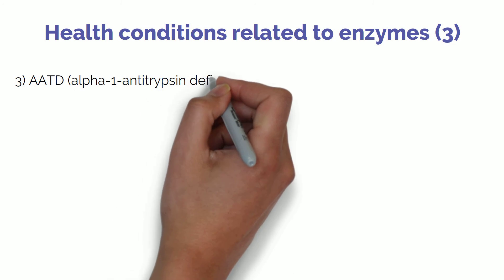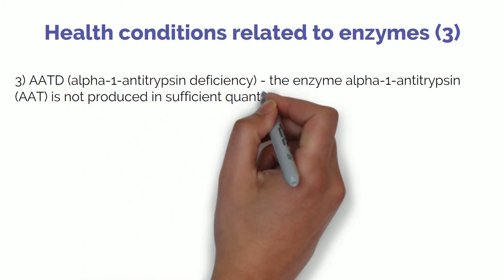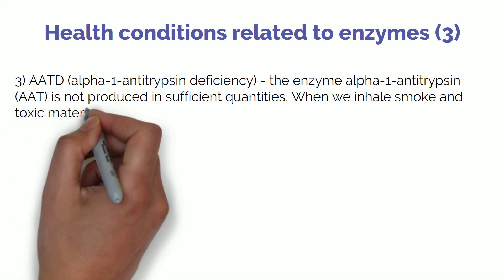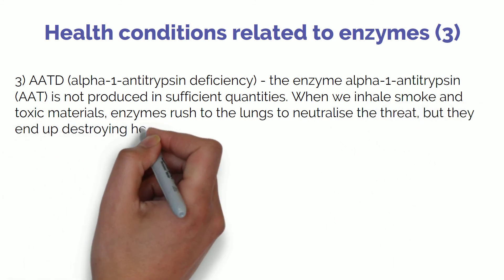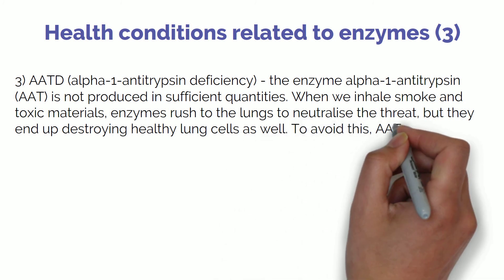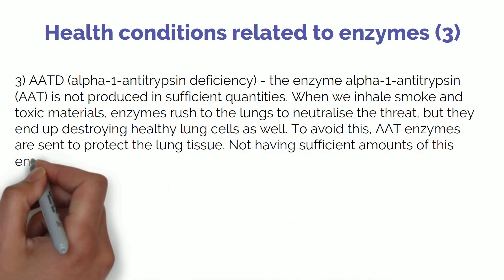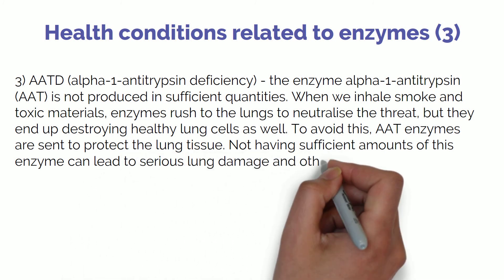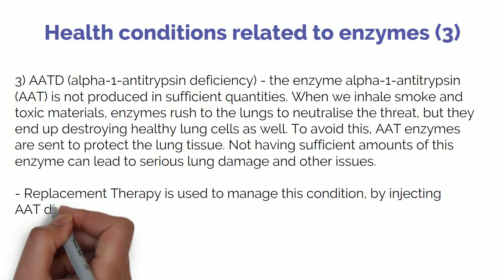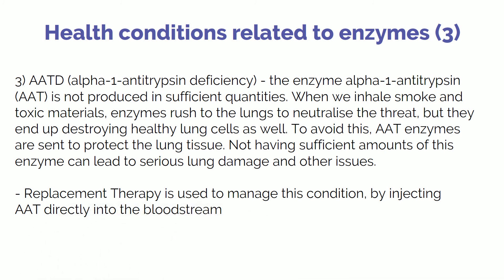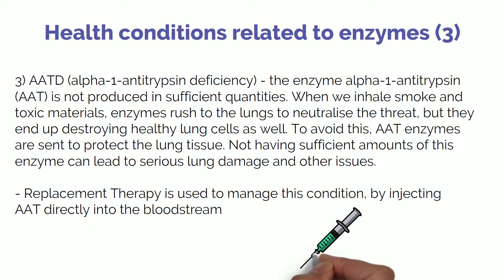AATD, or alpha-1 antitrypsin deficiency, is a condition in which the enzyme alpha-1 antitrypsin is not produced in sufficient quantities. When we inhale smoke or toxic materials, white blood cells and enzymes act in the lungs to break down the toxic material — however, these enzymes can also break down healthy lung tissue in the process. AAT enzymes normally protect the lungs, but in AATD they are insufficient, leading to lung damage and numerous lung conditions. A treatment being investigated is replacement therapy, in which the AAT enzyme is injected directly into the bloodstream to balance out the low levels and decrease symptoms.